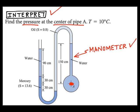I see that I have a manometer, and this manometer has three fluids: water, oil, and mercury. Dimensions are given, and also values of specific gravity for the various fluids are given.